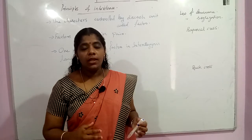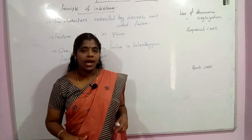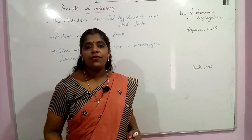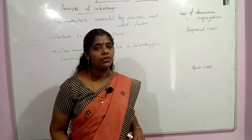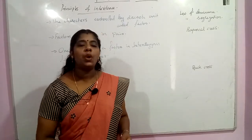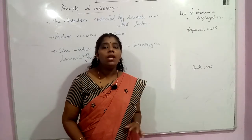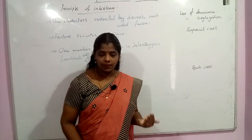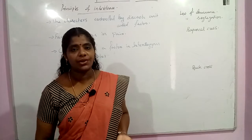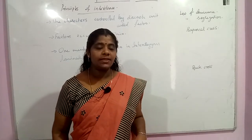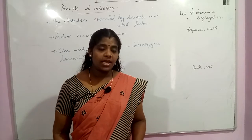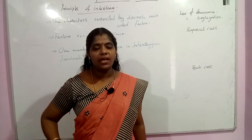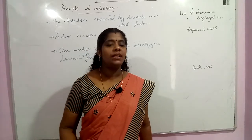In the F1 generation, whatever hybrid was obtained, when the next F2 generation was produced, the 3:1 ratio of tall and dwarf progeny confirmed the law of dominance. The character hidden in the first generation is able to express in the next generation, and the recessive character appears only in the second generation in lesser numbers.